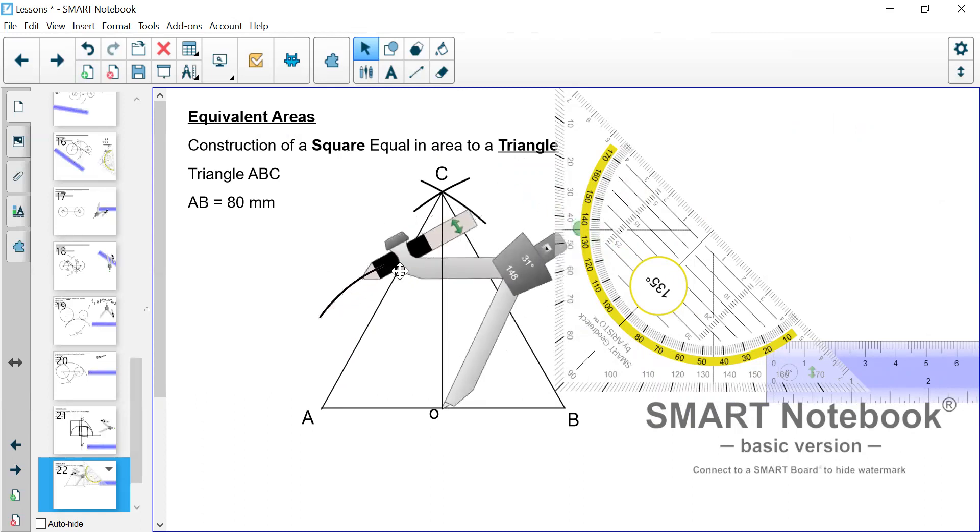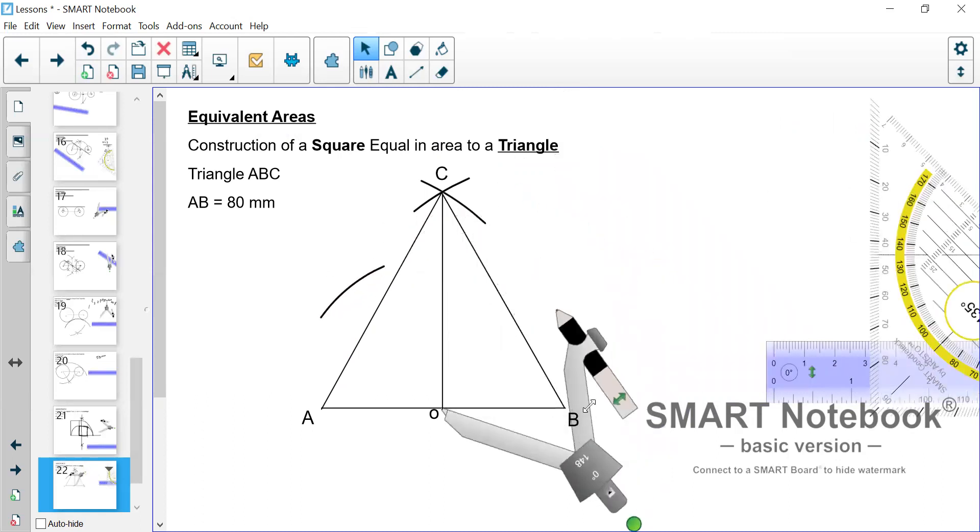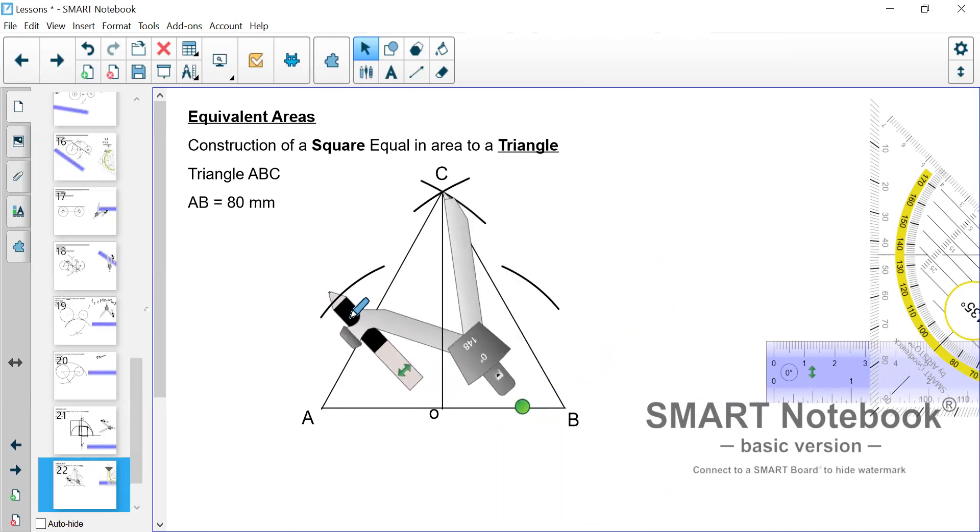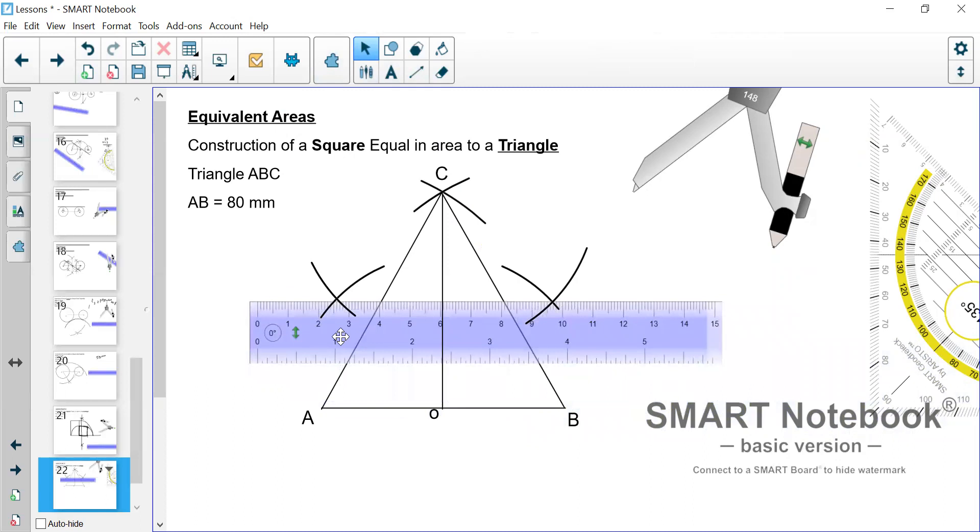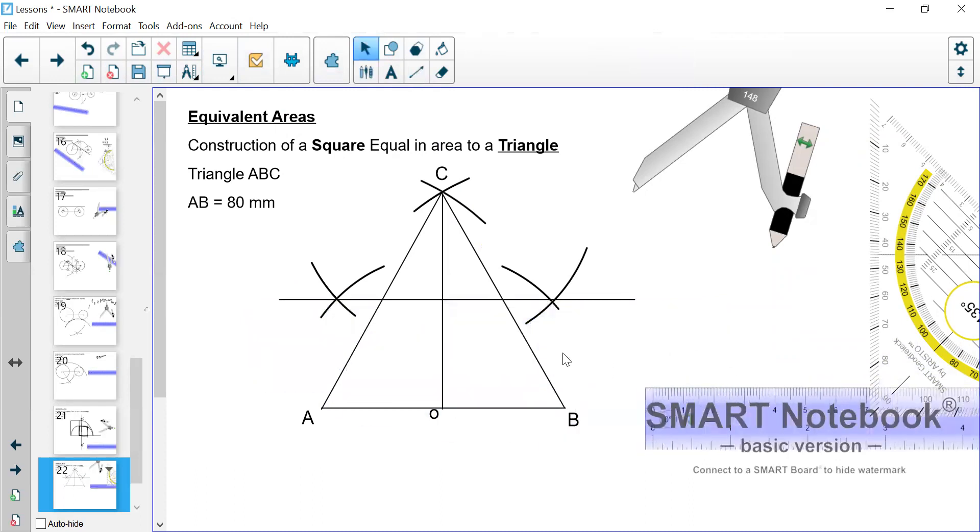And again, everybody should remember how to bisect a straight line. And then we go from C, and we do the same. And we draw our line straight through. So, let me just get the ruler, so we can simply draw in these lines. So, that will give us the height, or the top of the rectangle.